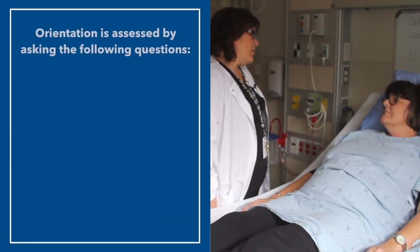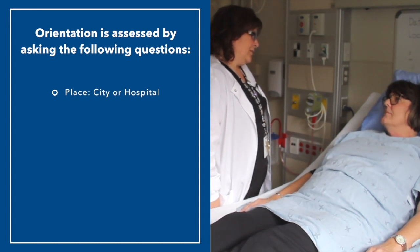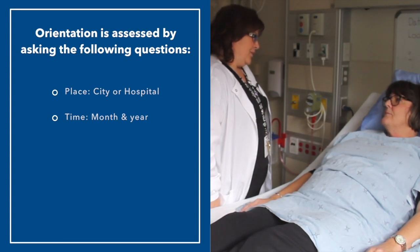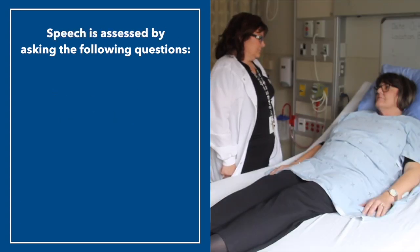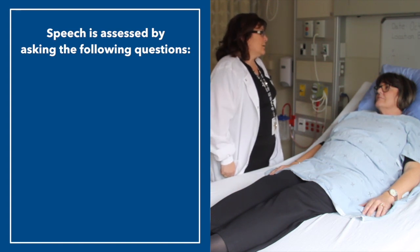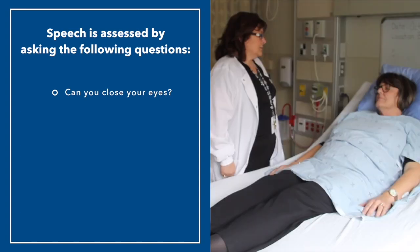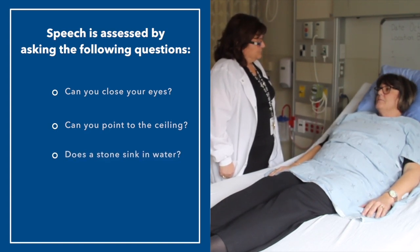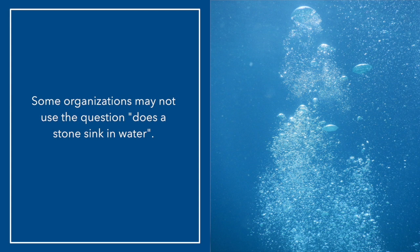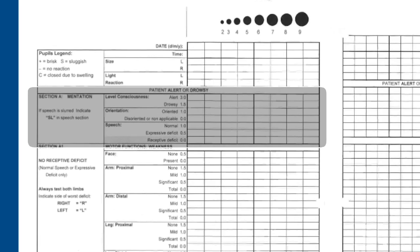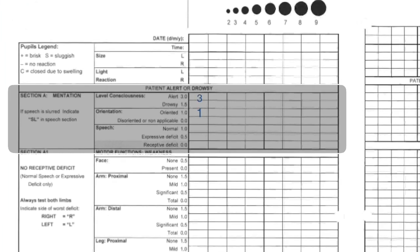Case Example 2. The nurse asks: 'Hi Dorothy, can you tell me what city we're in?' Patient: 'Berry.' 'Can you tell me the month and the year?' Patient: 'October 2018.' Receptive speech is assessed without prompting by gesturing. The nurse asks Dorothy to close her eyes, point to the ceiling, and whether a stone sinks in water. Please note that not all facilities use the stone-sink question. The patient responded appropriately, therefore the patient does not have a receptive deficit.